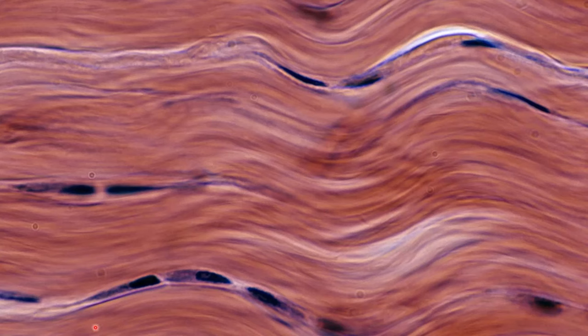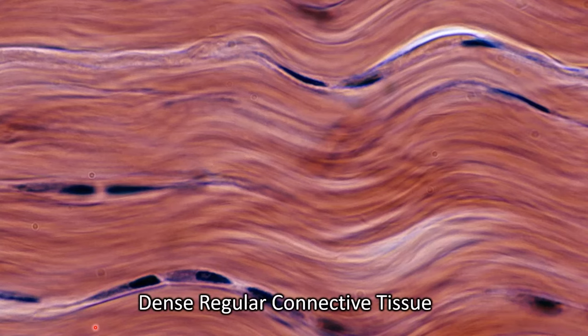This is another example of dense regular connective tissue. Here, it is easier to see that these cells are located in between the non-living fibers, but you can also see what I was talking about with the rows lined up end to end.